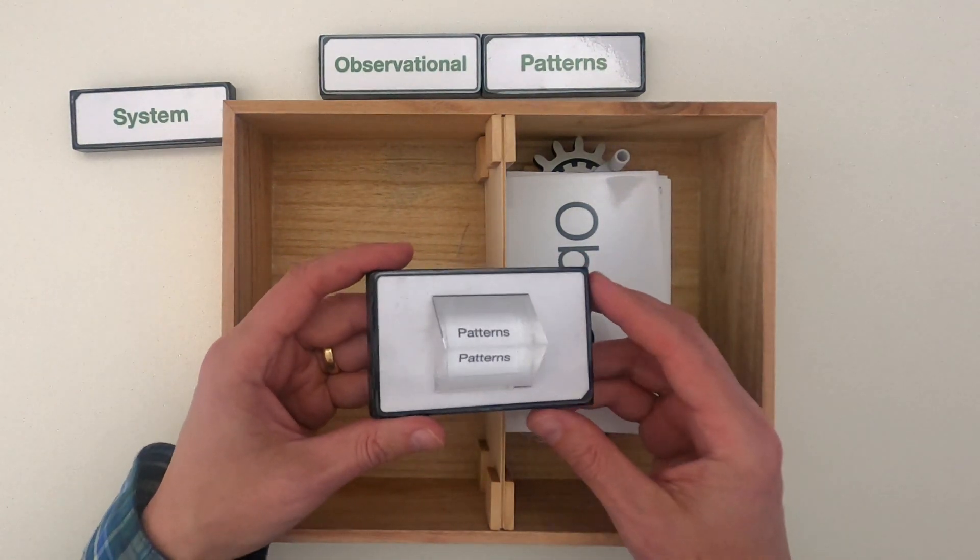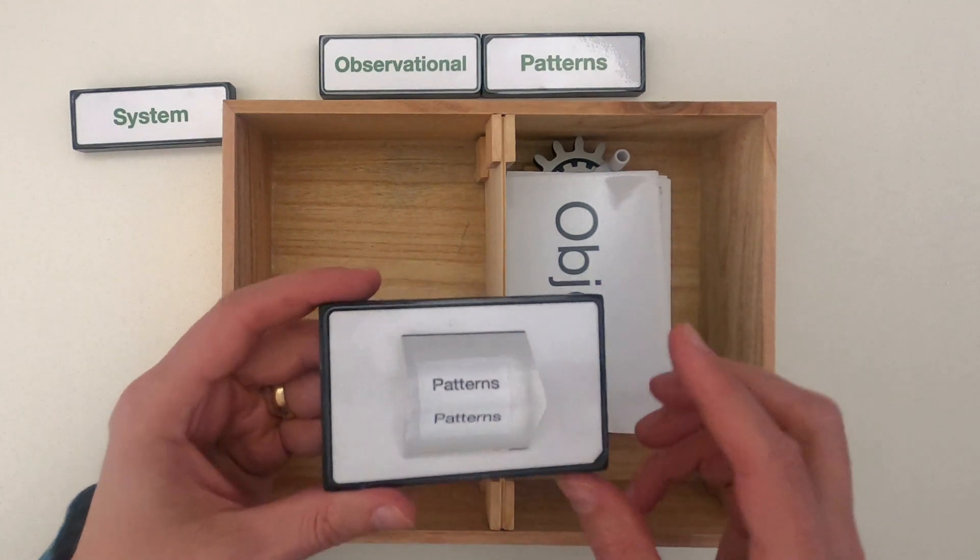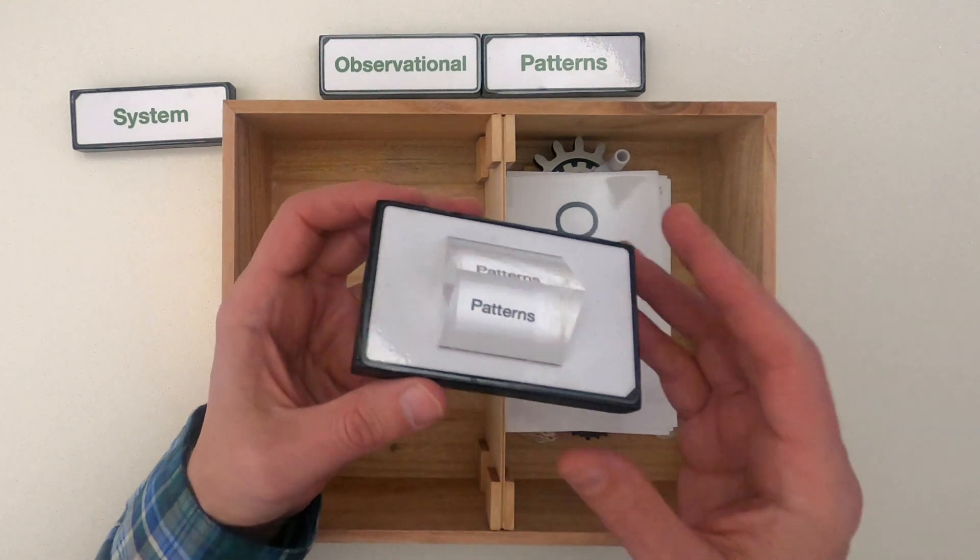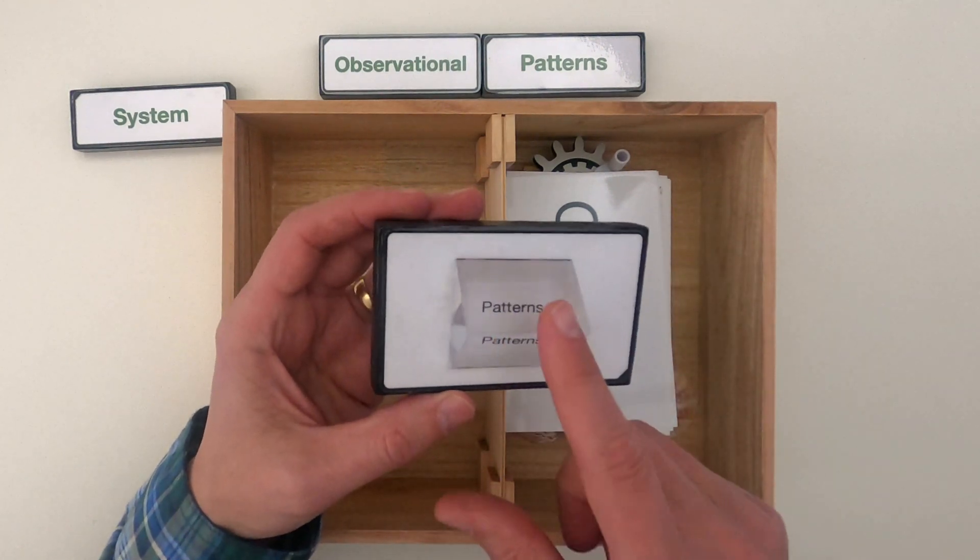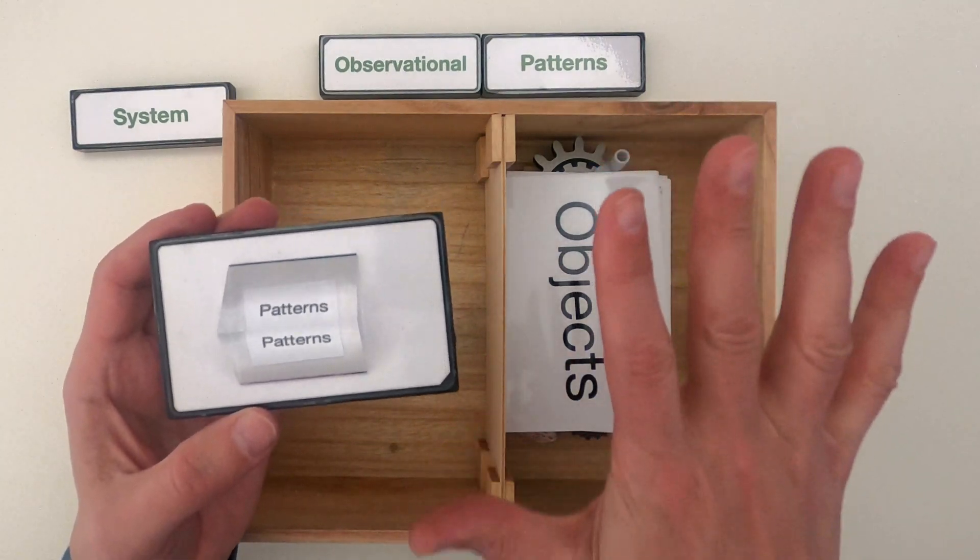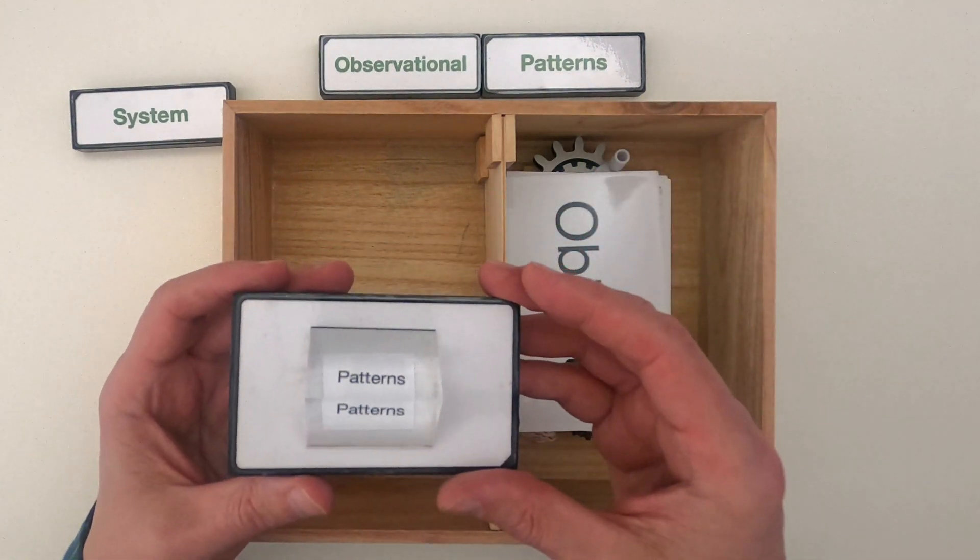The object we'll use to represent patterns is a prism. And the reason it's a prism is if you use it in different ways, you can see different things. It's also a five-sided prism and that should remind you of your five senses and that you should always, when you're looking for observational patterns, walk your way through all of those senses.